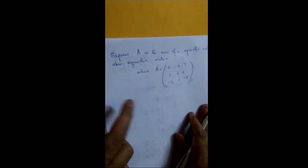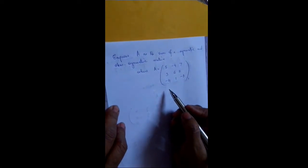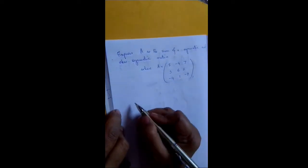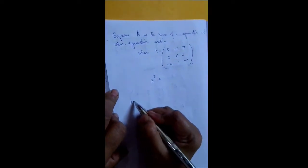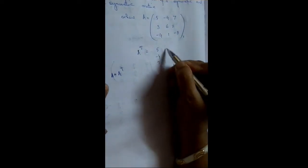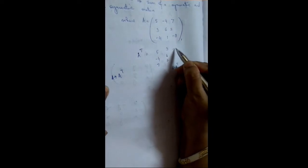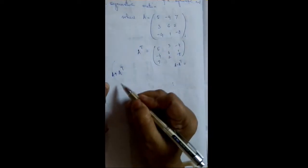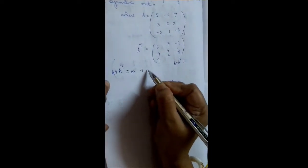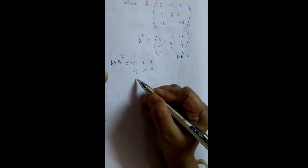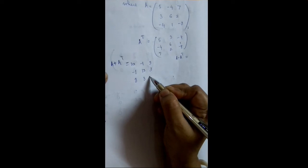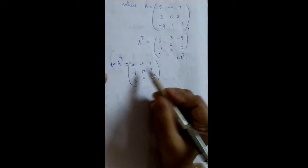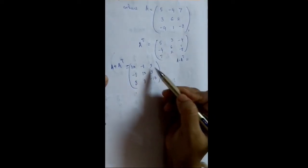Next, we are given a matrix A and we have to express A as the sum of a symmetric and a skew symmetric matrix. We already know that for any matrix A, A plus A transposed is symmetric and A minus A transposed is skew symmetric. So let us find A plus A transposed. A transposed is 5, minus 4, 7; 3, 6, 2; minus 4, 1, minus 8. A plus A transposed gives 10, minus 1, 3; minus 1, 12, 3; 3, 3, minus 16. Yes, it's symmetric.